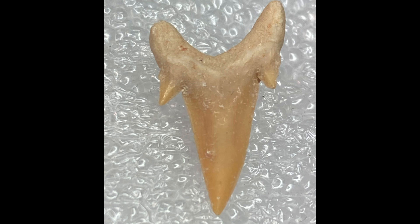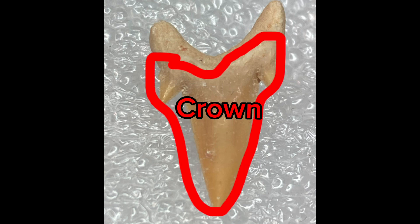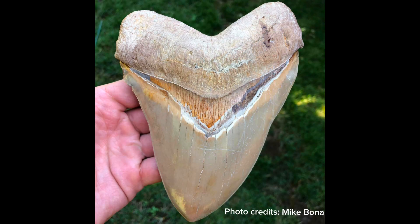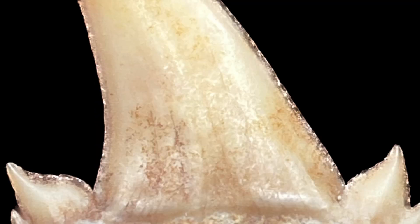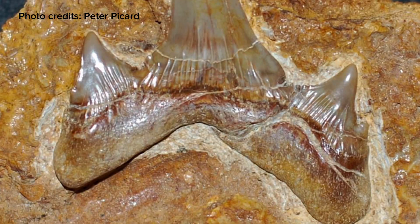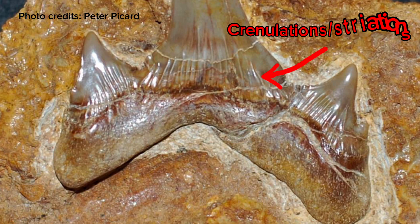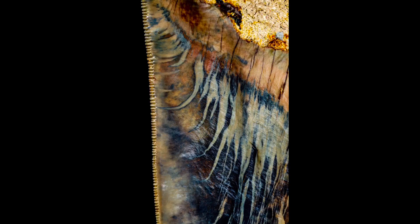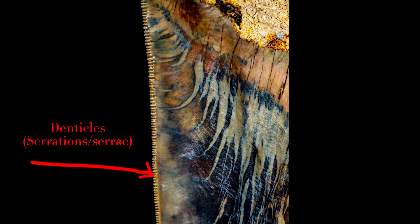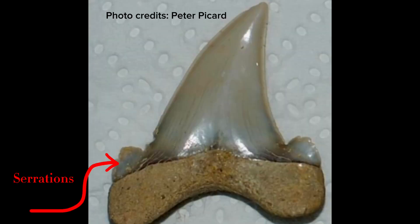The toothy portion is referred to as the crown of the tooth. The outer shell covering the crown is known as enamelloid, which is different in composition and structure than the true enamel found on our own teeth. The enamelloid could be smooth, or it could have folds scientifically called crenulations or striations. A tooth of blade-like shape could have smooth cutting edges, or cutting edges lined with small denticles — also known as serrations or serrae — as well as sometimes a combination of the two.